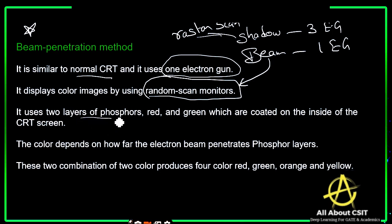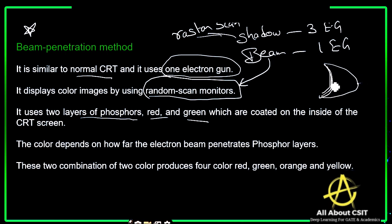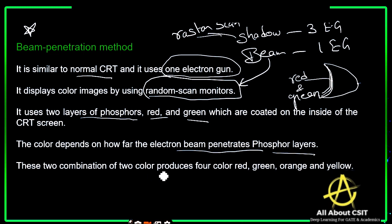Beam penetration uses two layers of phosphor — red and green — coated on the inside of the CRT screen. The color displayed depends on how far the electron beam penetrates the phosphor layers. The combination of these two colors produces four colors: red, green, orange, and yellow, because the combination of those colors gives different resulting colors.